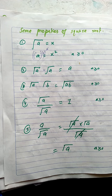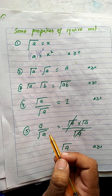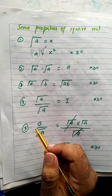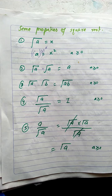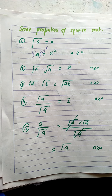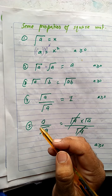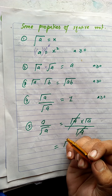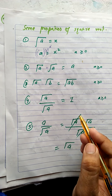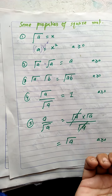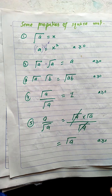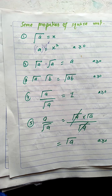Property number five: a divided by under root a. We can write a as under root a multiplied by under root a, so under root a divided by under root a cancels, leaving under root a as the answer. This is property number five.